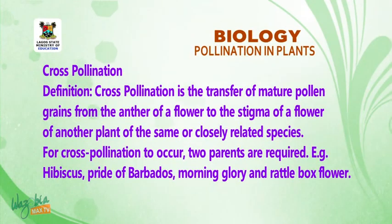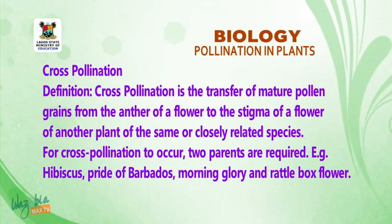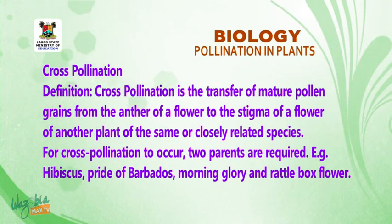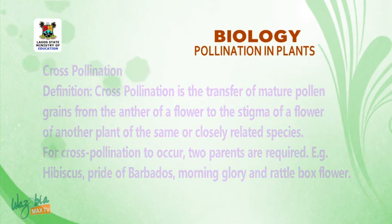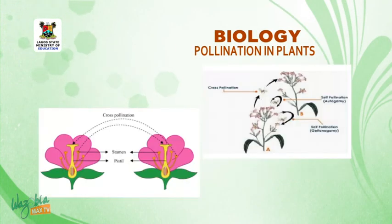For cross-pollination to occur, two parents are required. For example, we have Hibiscus, Pride of Barbados, Morning Glory, and Retro Ball's Flower. Look at the picture for cross-pollination.